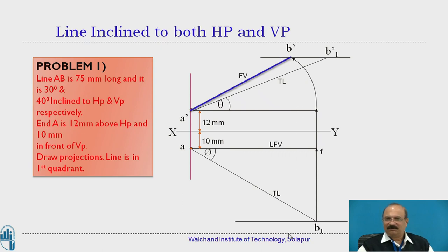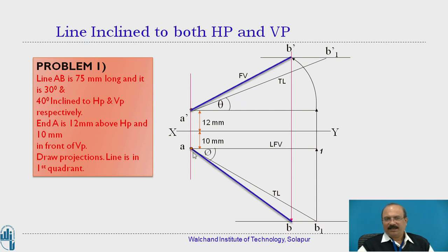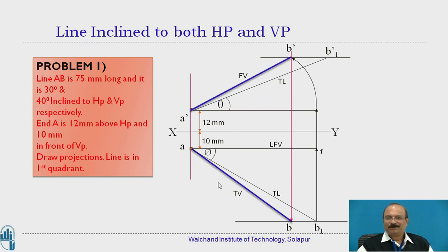Now bring this point directly downward — it will cut on the locus point. The same procedure is adopted for the top view. Bring it in the downward direction; it will cut on the locus point, giving you A-B as the top view length. All construction work should be drawn as thin lines. A dash to B1 dash as true length and A to B1 as true length are drawn as medium thickness. A dash to B dash as front view length and A to B as top view length are drawn as dark lines, as these are the final required projections. All remaining lines are construction lines and must be drawn as thin lines.